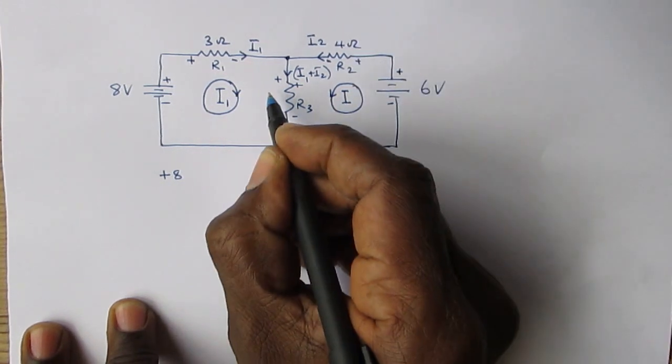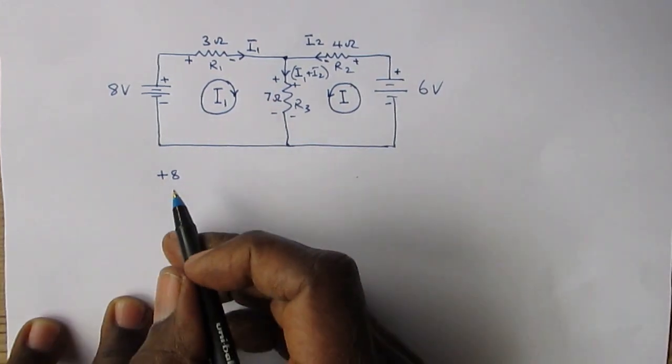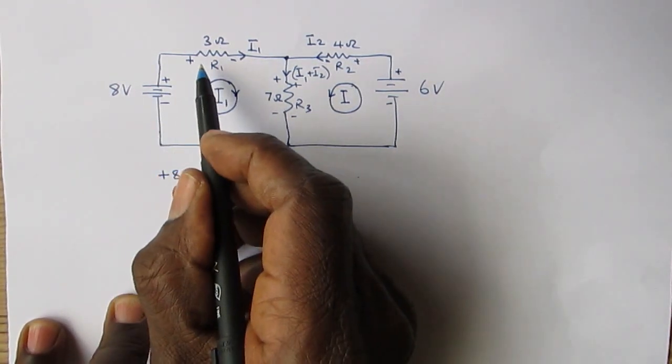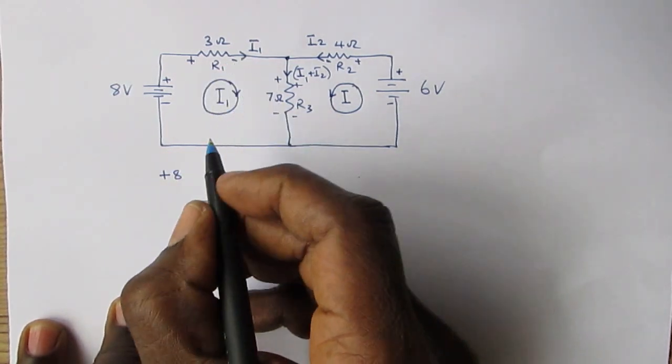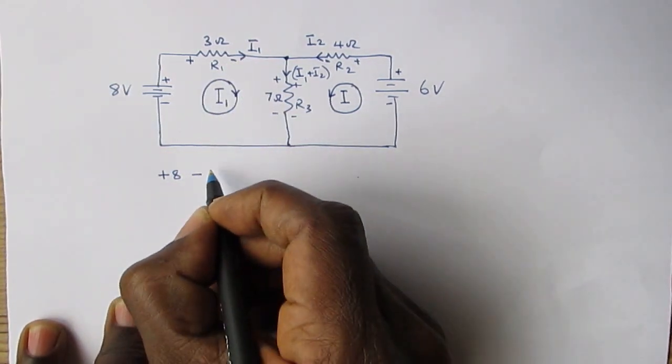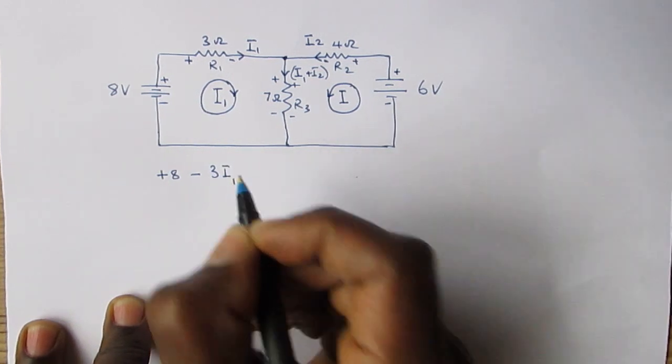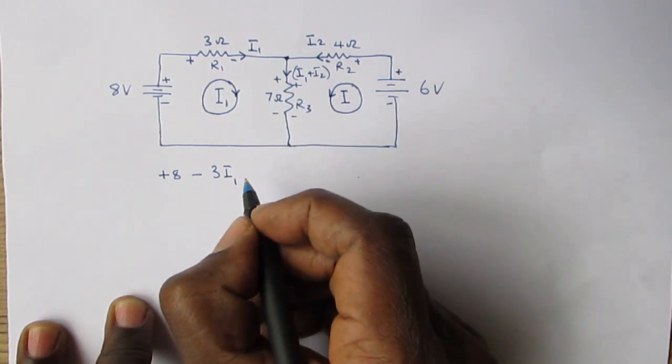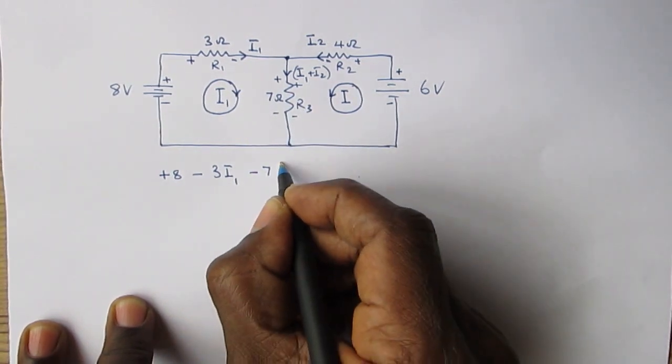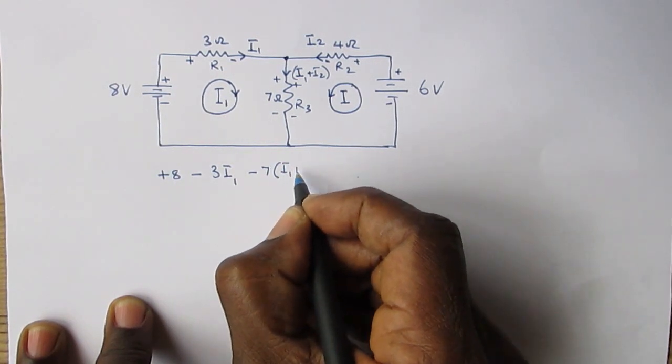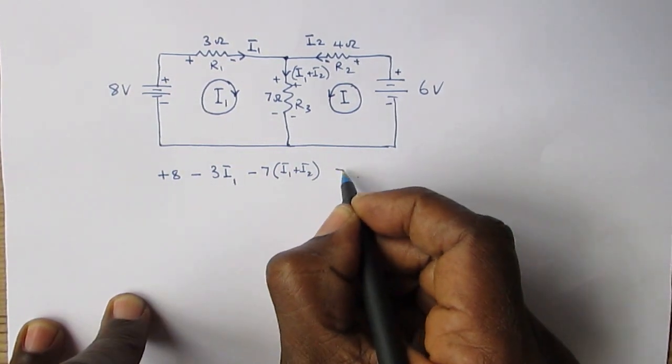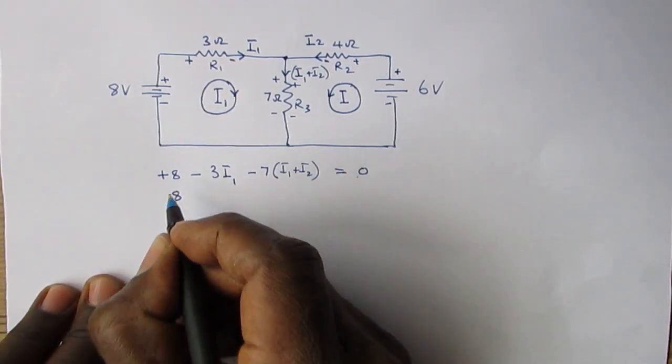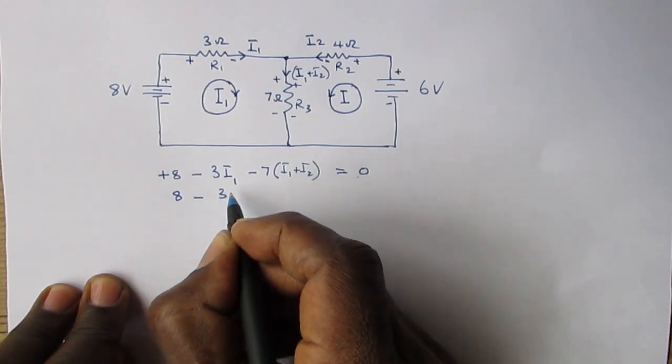Let's go again. Starting from here, plus 8 volts. The voltage across here would be minus 3I1. The voltage across R3 would be minus 7 times (I1 plus I2), and that all equals zero volts.